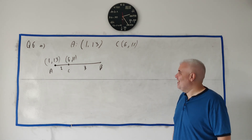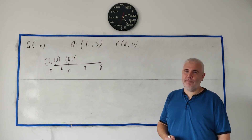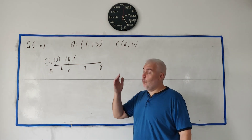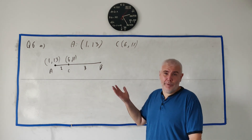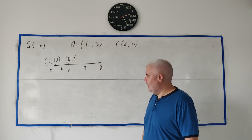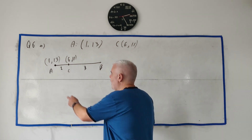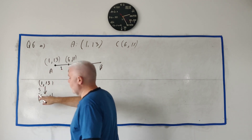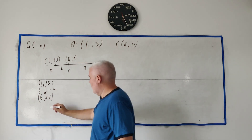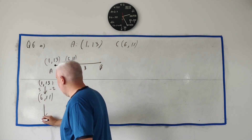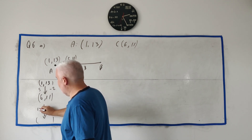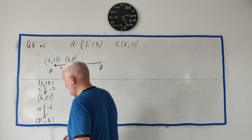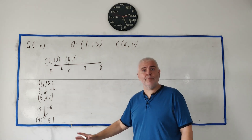There are a few ways to do this question. The simplest way is: how do you get from (1, 13) to (6, 11)? You go plus 5 on the x and minus 2 on the y. Now do that 3 times — 5 three times is 15, minus 2 three times is minus 6. So from (6, 11) you get to x = 21 and y = 5. That's the answer to part A: B is (21, 5).